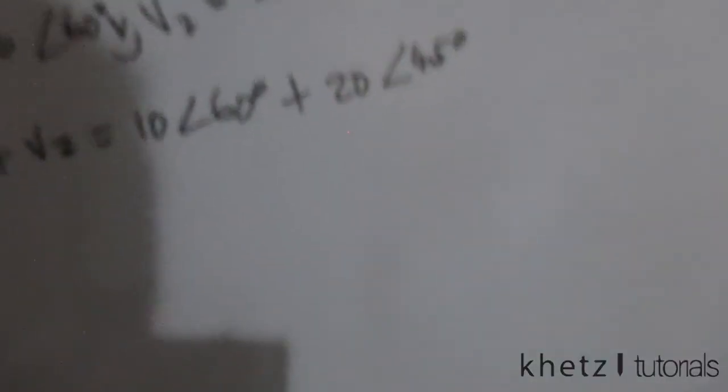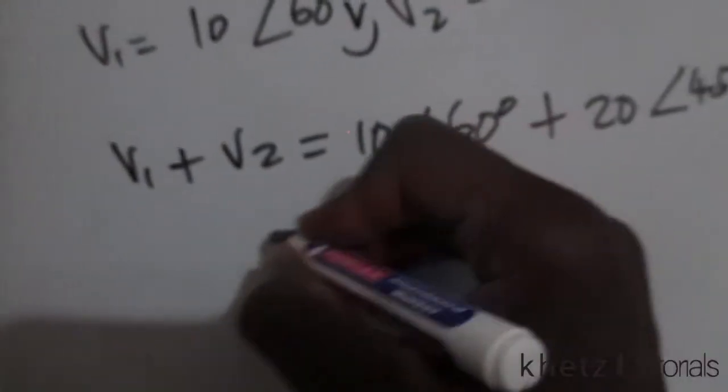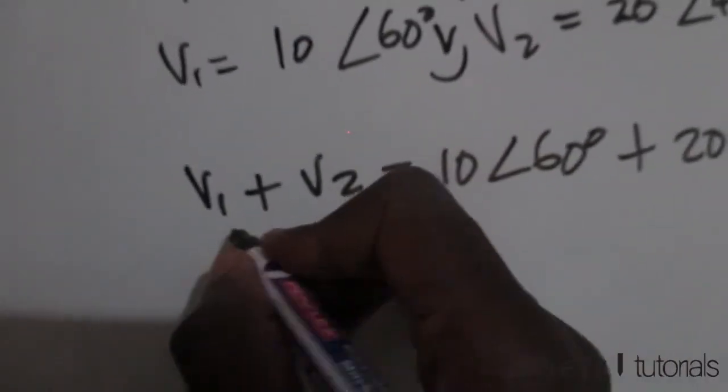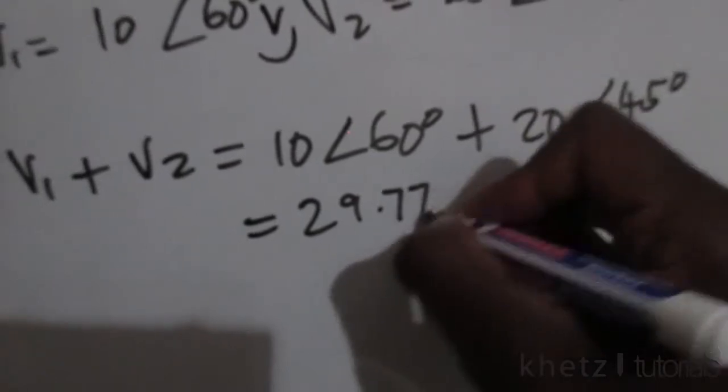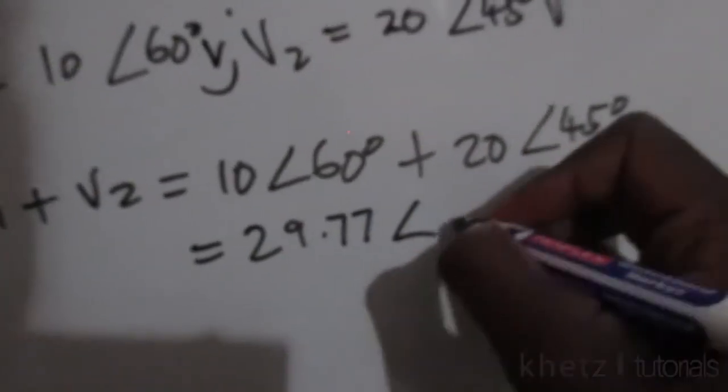So the resulting phasor of v1 + v2 is 29.77∠49.987°, not forgetting the units.